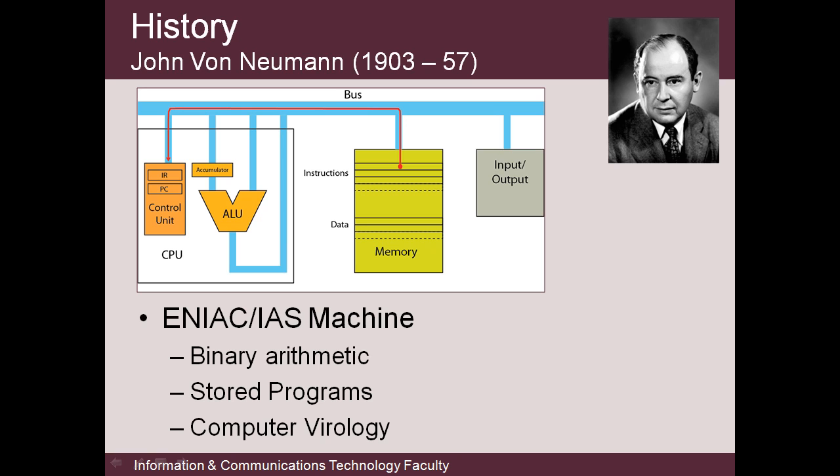John von Neumann, whose work on computers was a tiny fraction of his output, contributed to the development of the Turing-complete ENIAC computer of 1946. He developed the concept of the stored program machine, which Turing also published on, along with the use of binary arithmetic, and the essential von Neumann computer structure shown here: a central processing unit, common data and instruction memory, and input-output devices. Incidentally, he also developed a self-modifying and self-replicating program, and hence the field of computer viruses.